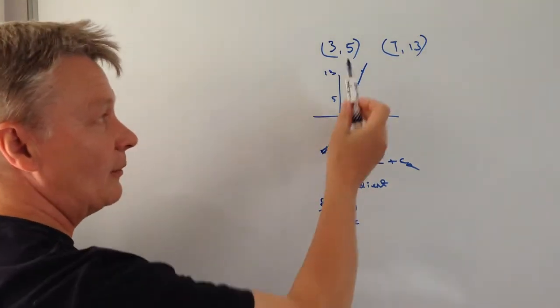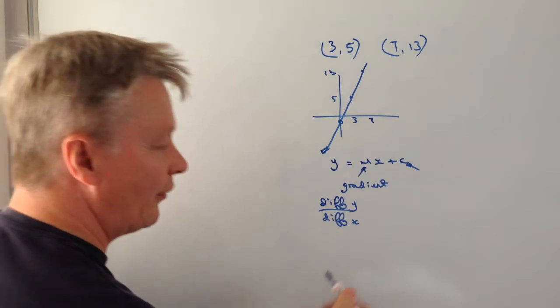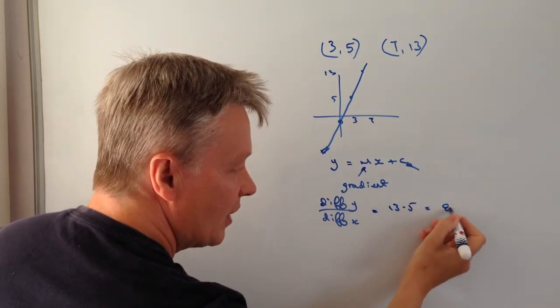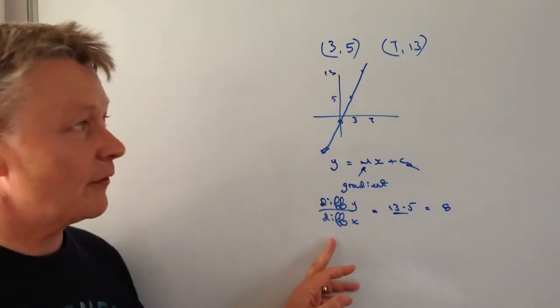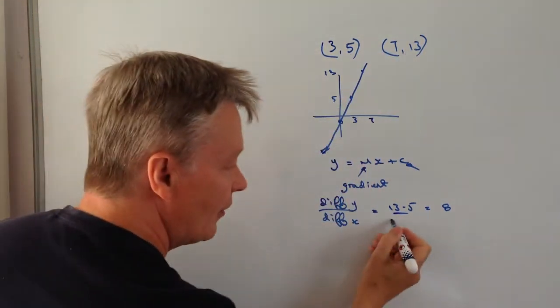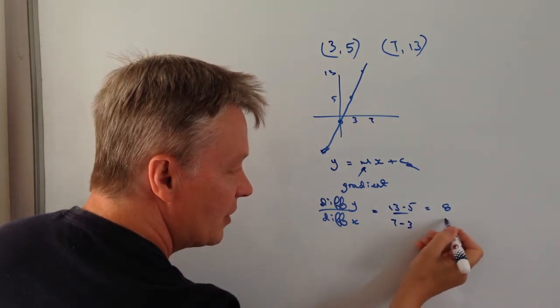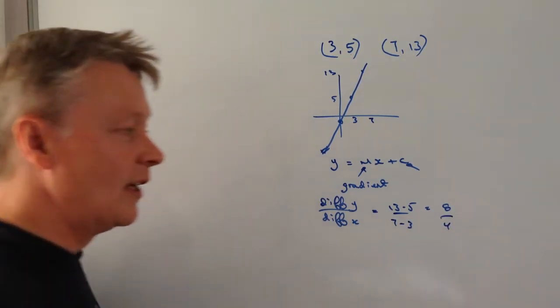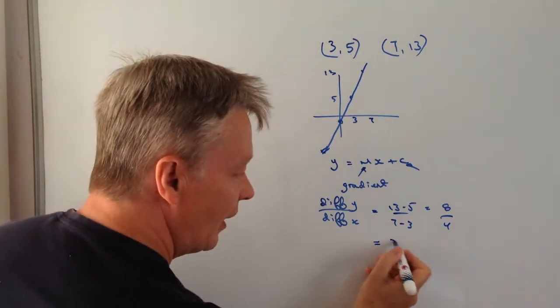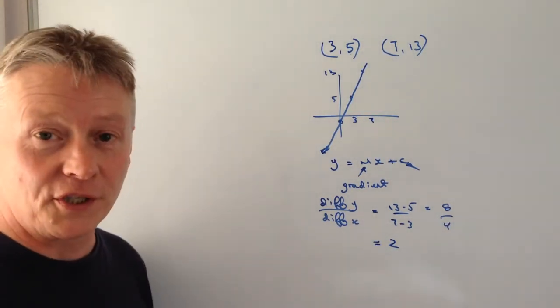Difference in y, well I'm looking at the difference in the y coordinates, so I've got 13 minus 5 which is going to be equal to 8, and then at the bottom I've got the difference in x. So the difference in the x coordinates is 7 take away 3 which is going to be 4. So therefore the gradient of this particular line is going to be 8 divided by 4 which is 2.